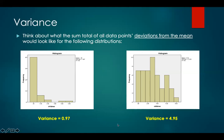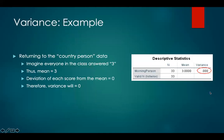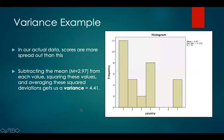Here are the actual variances for those distributions. Returning to the country person dataset we used to talk about mean — imagine that everybody in the class answered three, so the mean equals three. If everybody responded three, the deviation score from the mean for each subject would be zero, and therefore the variance would be zero since there is no deviation from the mean. In the actual dataset, scores were more spread out, and subtracting the mean from each score, squaring those values, and averaging the squared deviations gets us a variance of approximately 4.41.